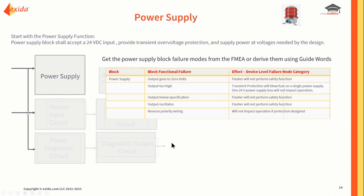We do have an FMEA, and the failure mode and effect analysis gives us the block functional failure modes — five of them — and their effects. Somebody has done the high-level design analysis pretty well.